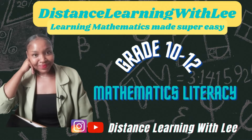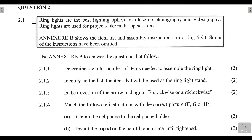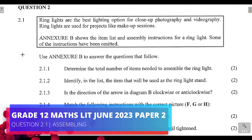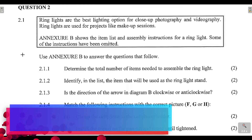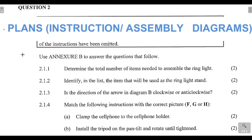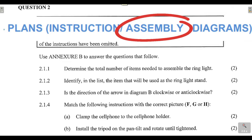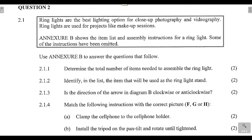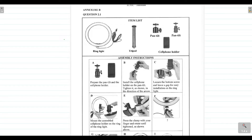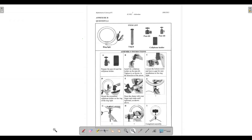Hey mathematics learners, welcome to Distance Learning with Lee, where I make learning mathematics super easy. On today's video tutorial, we are going to be tackling question 2.1 from the Grade 12 Mathematical Literacy Paper 2 that was written in June 2023. In this question, we are going to be dealing with plans — in particular, assembly. This is a topic where you look at a diagram and follow instructions about how a particular item is assembled or put together.